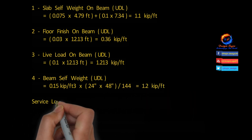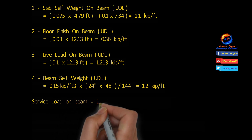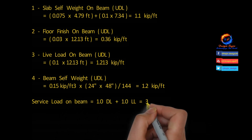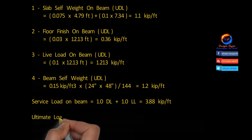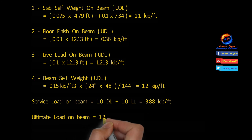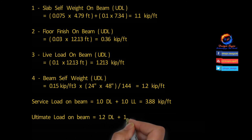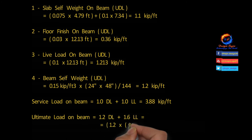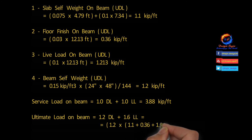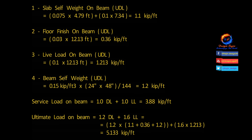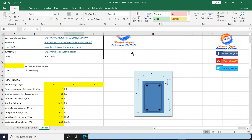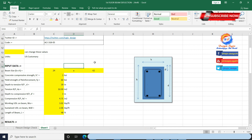Service load is 1.0 dead load + 1.0 live load; adding all loads equals 3.88 kip per foot. Ultimate load is 1.2 dead load + 1.6 live load, result equals 5.13 kip per foot. I am entering data to the Excel sheet to calculate beam deflection.